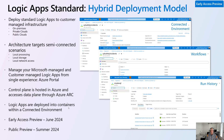A nuance of semi-connected in Logic App standard is that we have two models of connectors. We've got the built-in connectors that run in your dedicated compute — those would continue to run on premises. But if you wanted to use Azure or managed connectors — things like Microsoft Teams, Office 365, ServiceNow, Salesforce, or Dataverse — those are all hosted in Azure. You would need to connect to the cloud to use those connectors, which is another example of the semi-connected model.